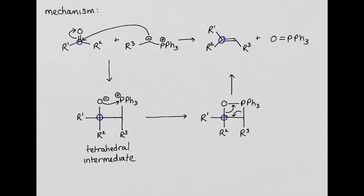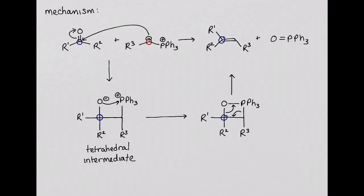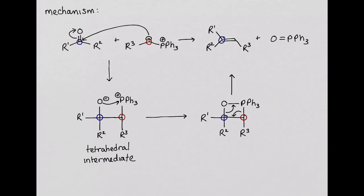The carbon of the phosphorus ilid is the carbon attached to phosphorus throughout the mechanism. In the tetrahedral intermediate it's this carbon. In the cyclic intermediate it's this carbon, and in the final alkene product it's the rightmost carbon of the alkene.